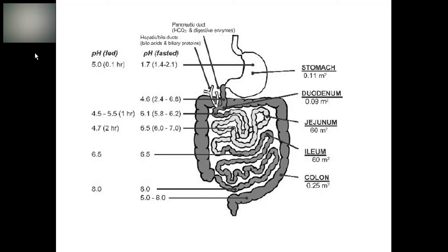The drugs which are taken orally majorly undergo absorption in the small intestine. Around 99% of drugs are absorbed through jejunum and ileum.